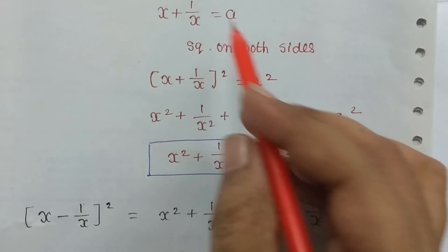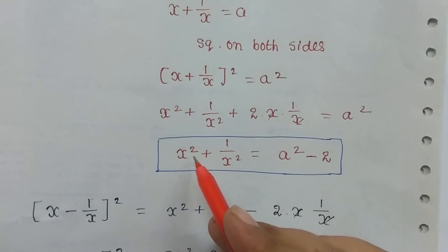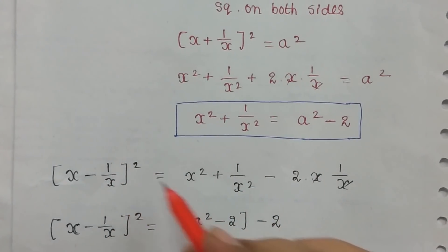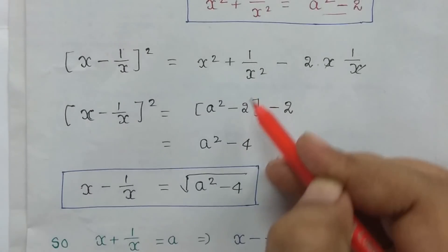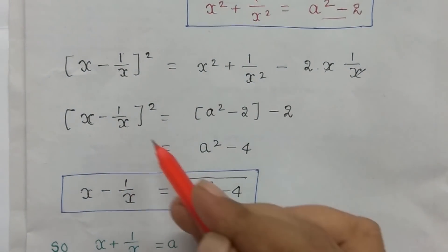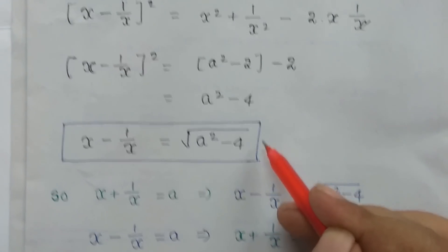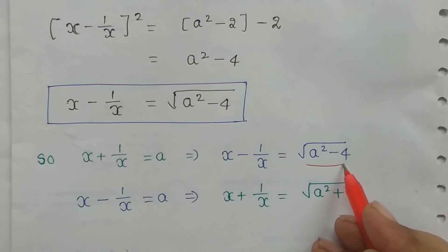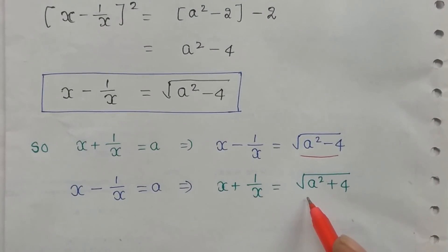We will show the concept from the previous video. We will have a square on both sides. This is the solution. We will show that x² + 1/x² is equal to a² minus 2. We will explain that the x² + 1/x² value is a² minus 2. We will substitute, so x minus 1/x squared is equal to a² minus 4.